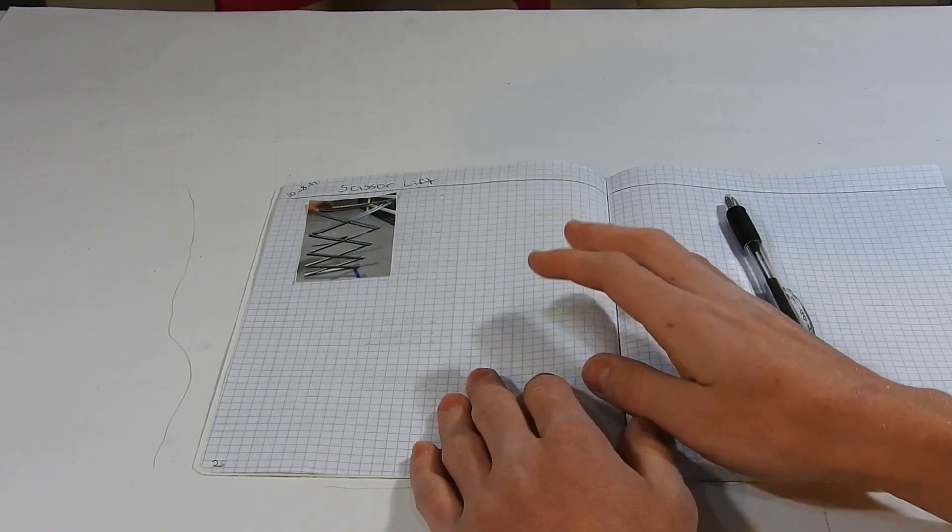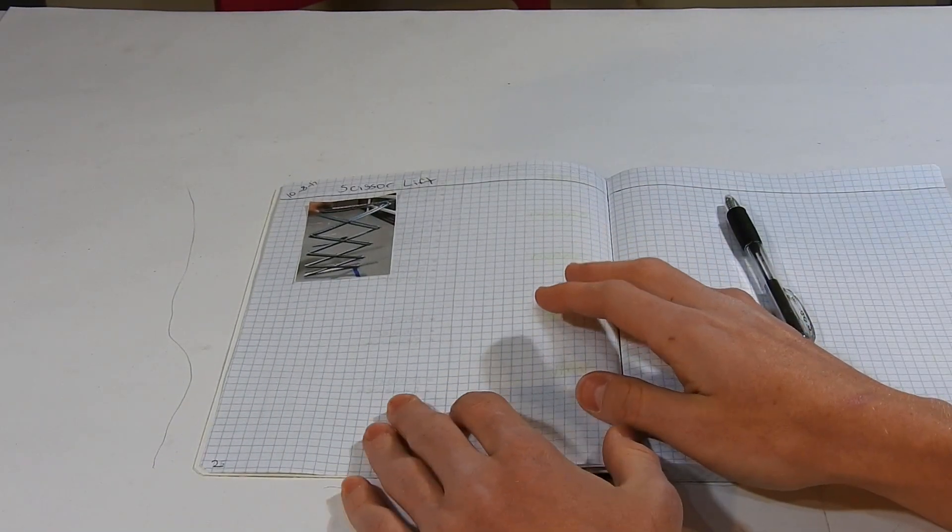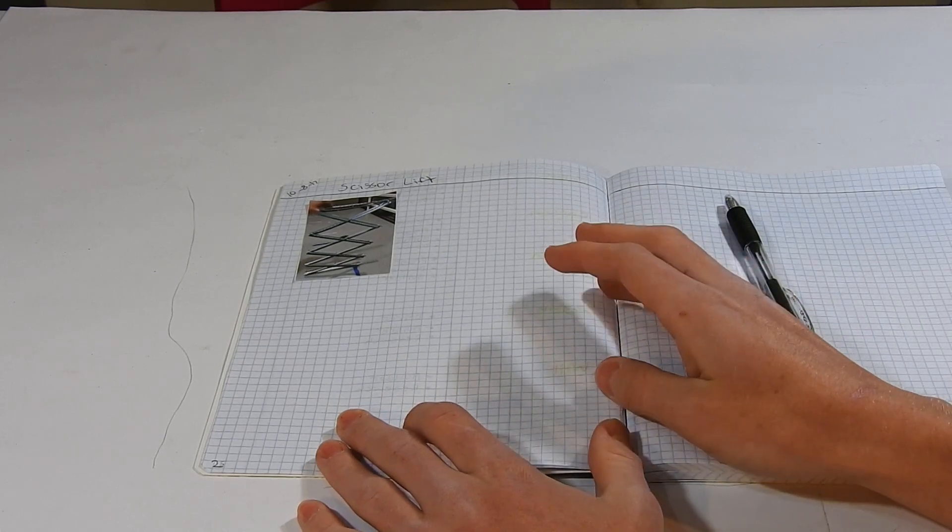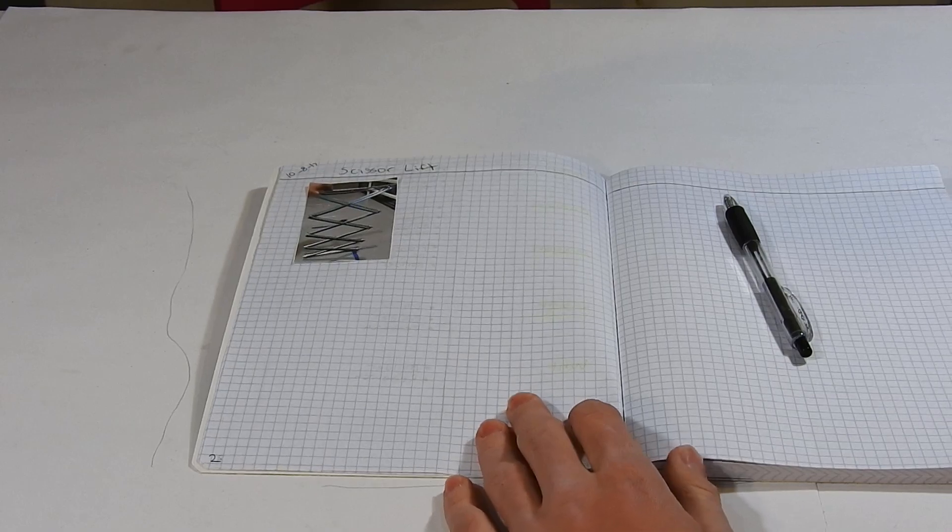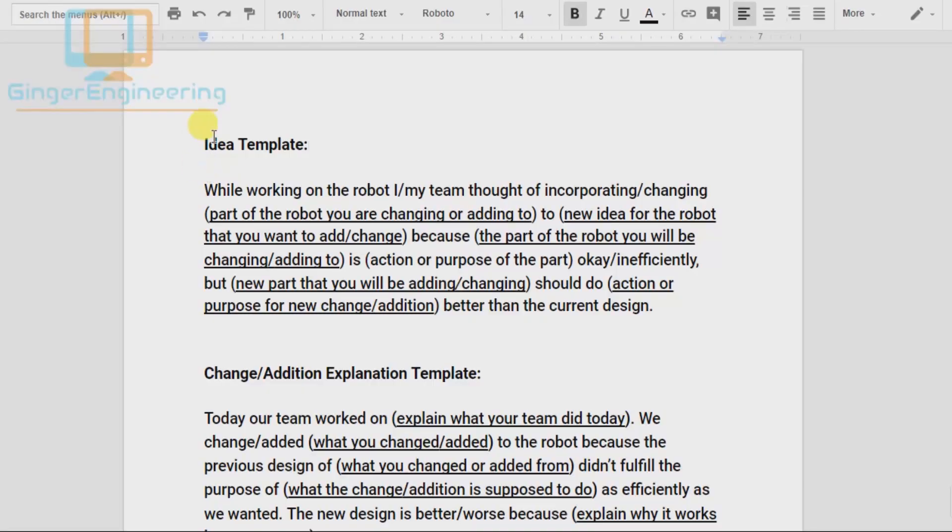Next, you're going to add a description of what you did that day or what you plan to do if this is just an idea page. So if it's just an idea, you're going to start out with, this is the template that I wrote out. So, you're going to start with, while working on the robot,